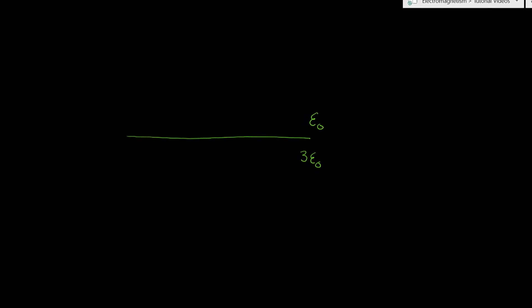Now we're going to have some electric field that's coming out — so this is our electric field E1, and there's going to be an electric field that's going in. We'll just make the angle 45 degrees, and then there's this electric field that's going in at some other angle, theta two.